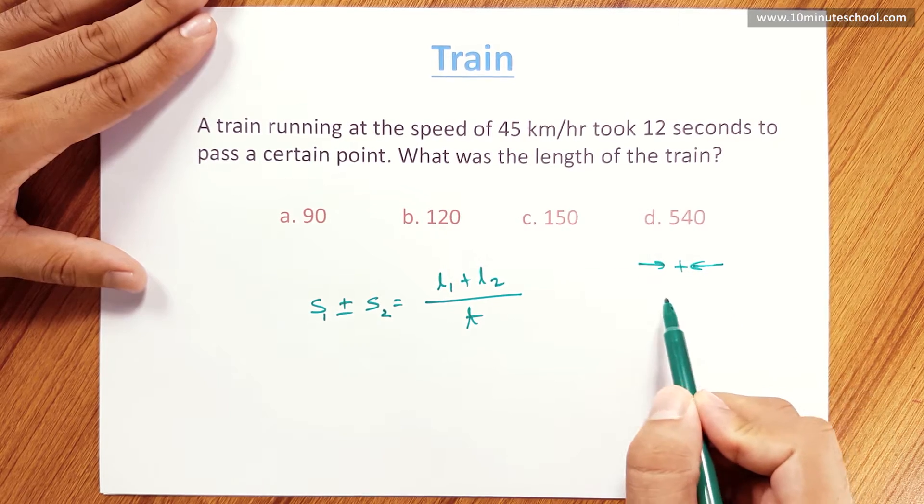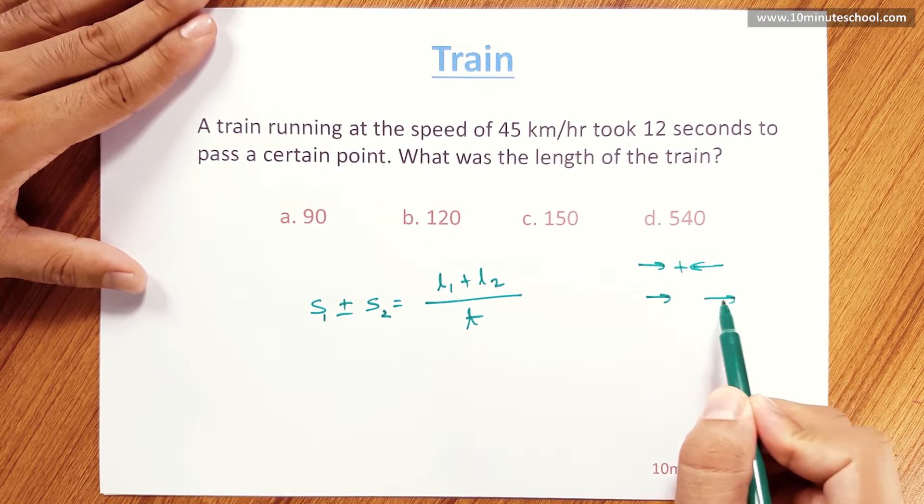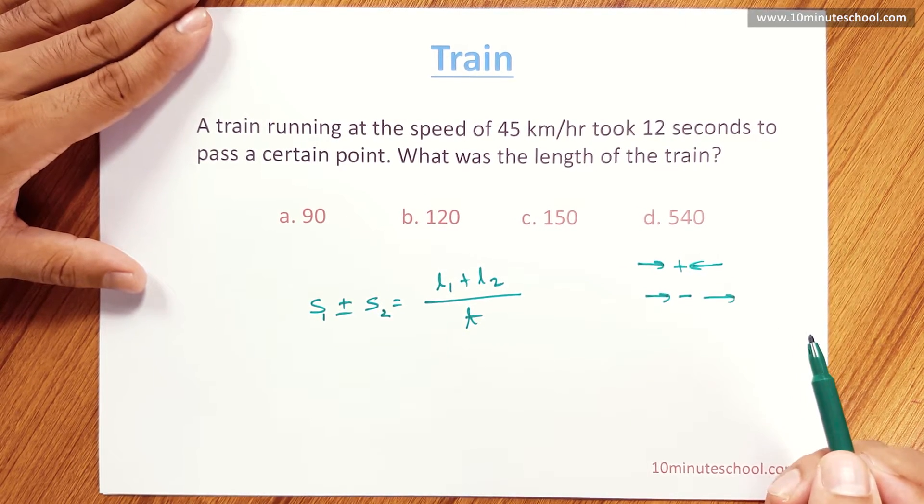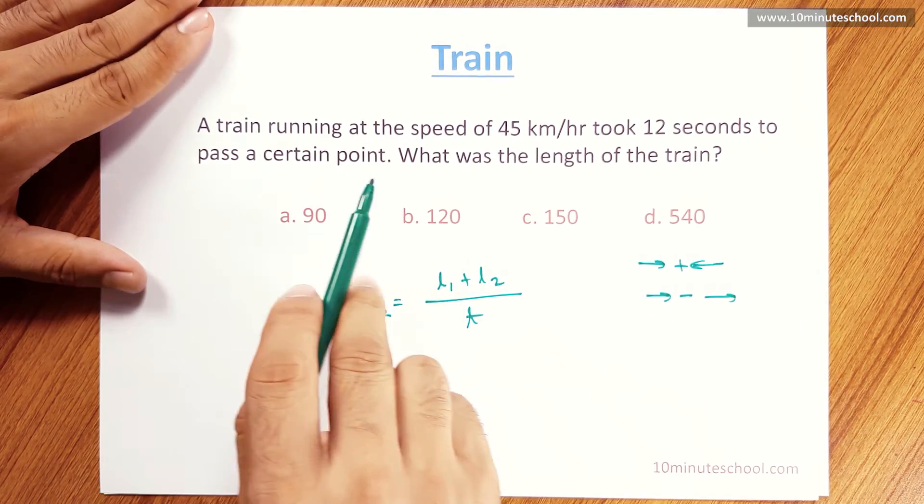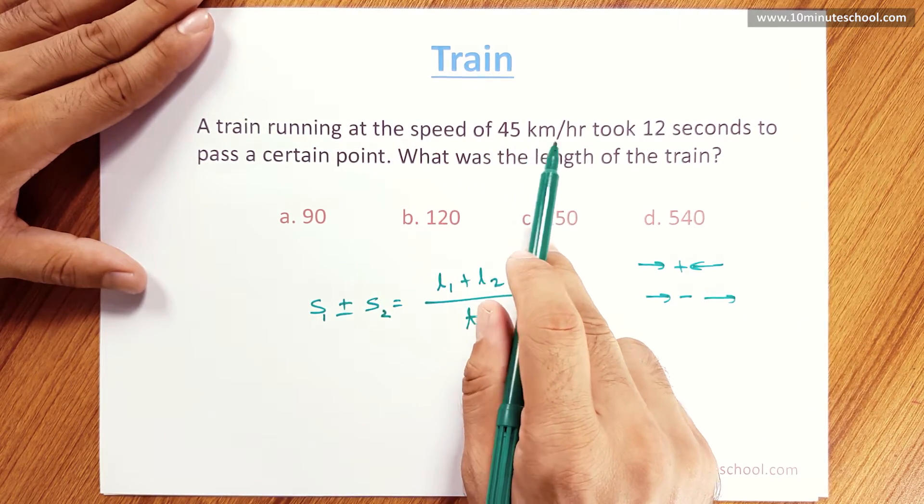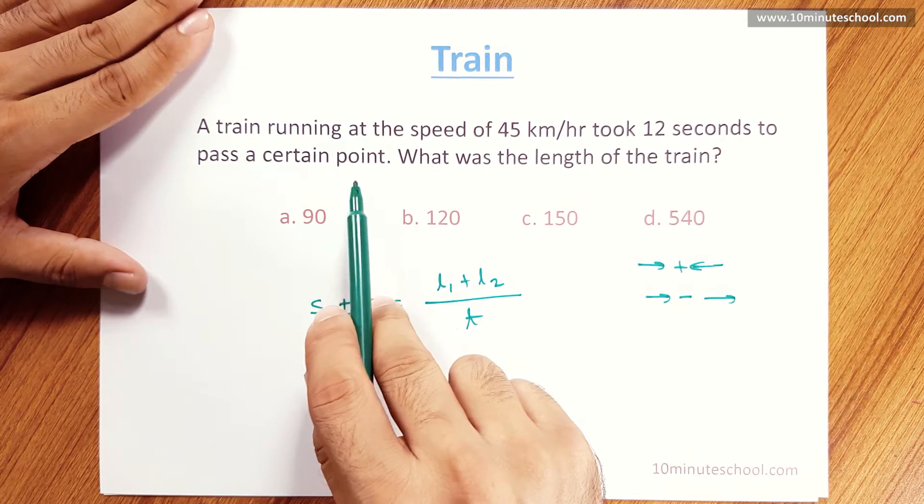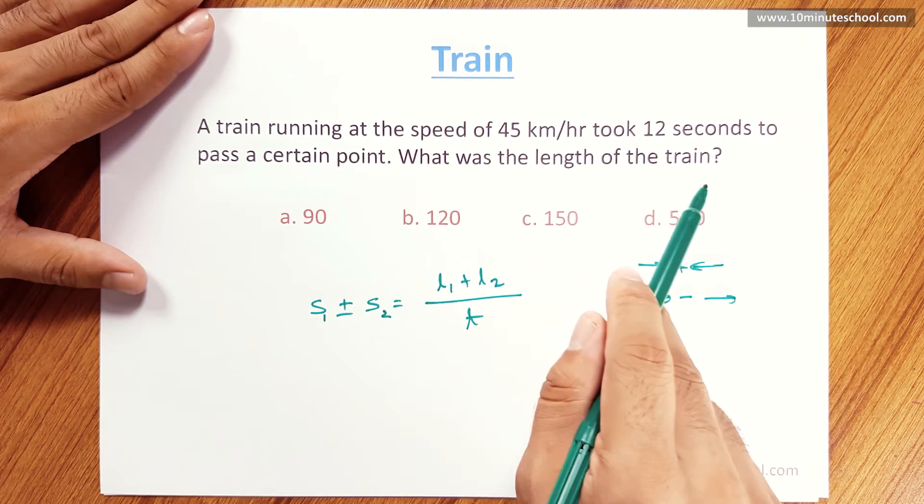This is a train problem. A train running at a speed of 45 km per hour took 12 seconds to pass a certain point. What was the length of the train?